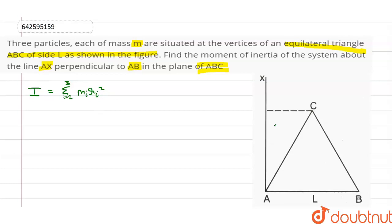We need to find ri for each of these masses at A, B, and C. Since ABC is an equilateral triangle, these angles will be 60 degrees.